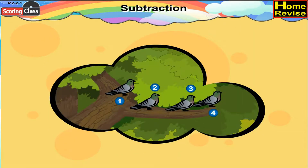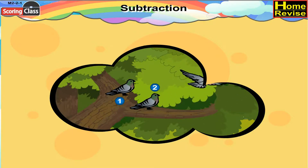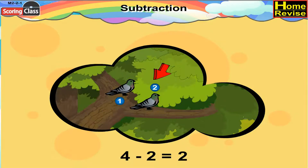Here, there are four birds sitting on the branch of a tree. Suddenly, two of them flew away. How many birds are left on the branch? That would be four minus two, which is equal to two. So only two birds are remaining on the branch.